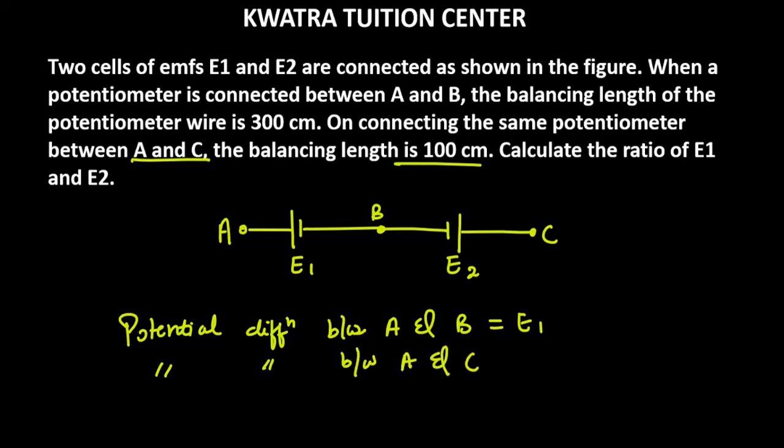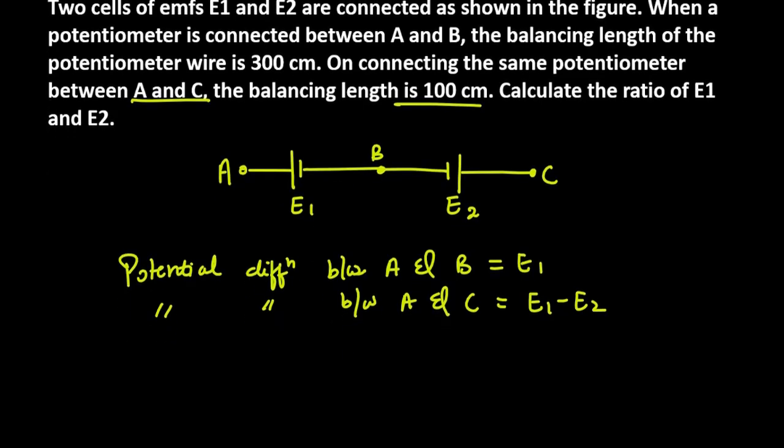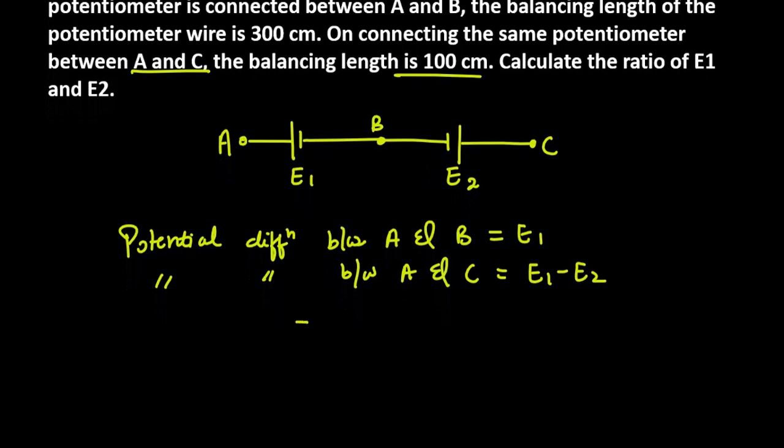We have two emfs, E1 and E2. Subtract them, that will be the potential difference between A and C. So we have both values: across E1 it is 300, and across E1 minus E2 it is 100.